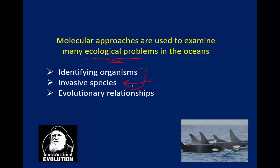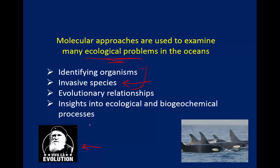We've also talked a little bit about how we can deduce evolutionary relationships among organisms — which applies not only to organisms in the oceans but also on land. Molecular approaches and DNA sequences in particular have been very useful for looking at evolutionary relationships. And finally, something we won't get into is using various molecular approaches to get insights into processes, especially biogeochemical processes carried out by microbes, which are rather difficult to look at by more traditional methods.